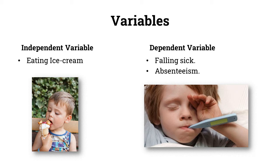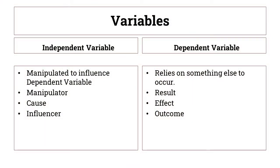The independent variable is manipulated to influence the dependent variable, whereas the dependent variable relies on something else to occur. To summarize: the independent variable is the manipulator, the cause, or the influencer, whereas the dependent variable is the result, the effect, or the outcome.